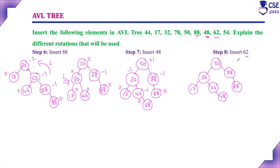Insert element 62. Since 62 is greater than 50, go right to 78; less than 78, go left. Attach 62 as the left child of 78. Check balance factors: all leaf nodes are 0; node 78 is -1; node 50 subtree has balance factor +1. All factors are 0, +1, or -1 — the tree is balanced. No rotation needed after inserting 62.